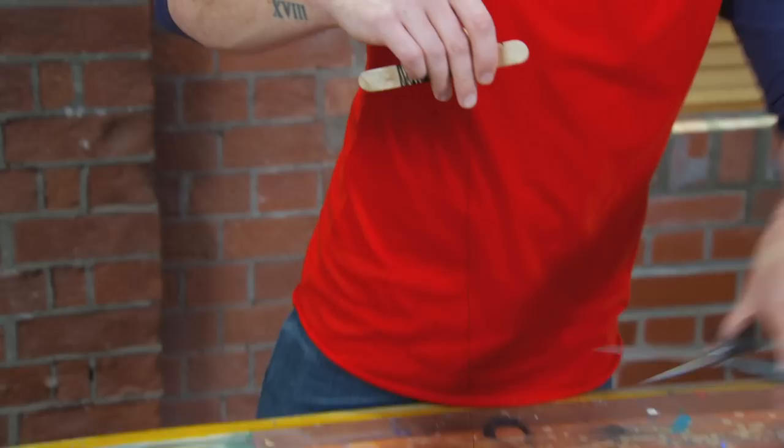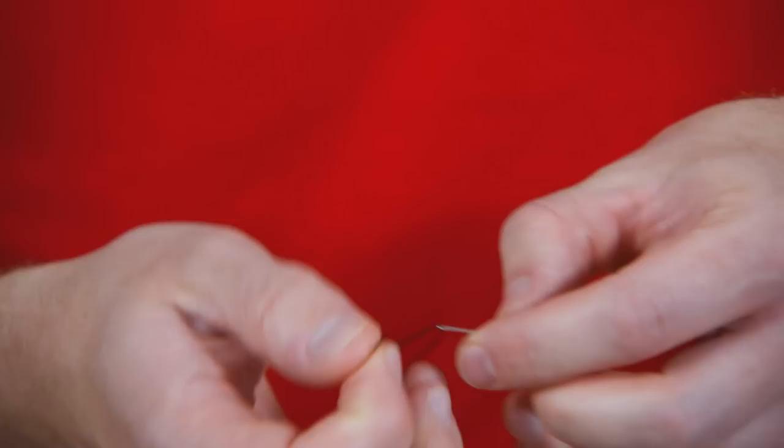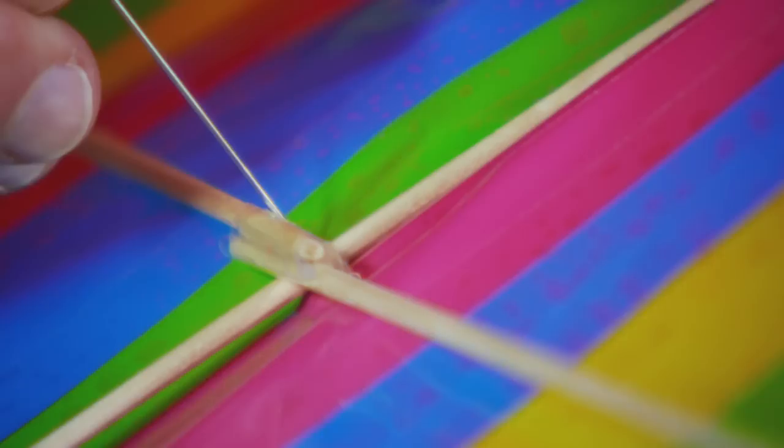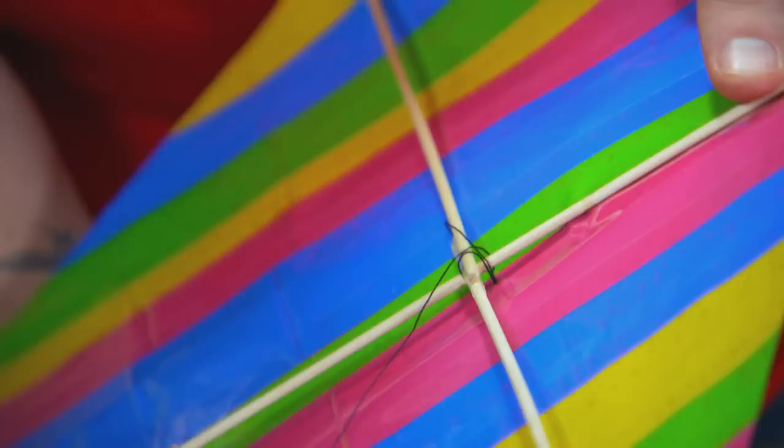So I'm going to thread it onto a needle. If you're going to try this at home, you might want to get an adult to help you. I'm going to stitch this where the skewers cross. Just make a little X pattern there for strength. Now just tie it off.